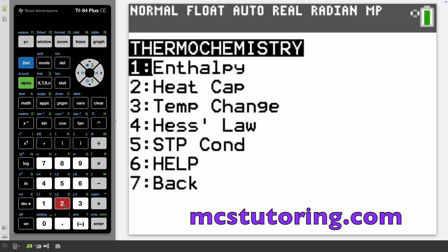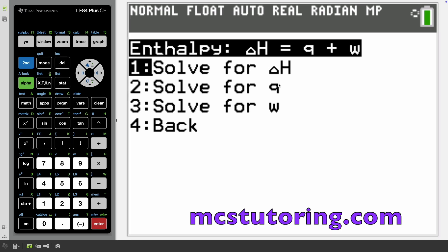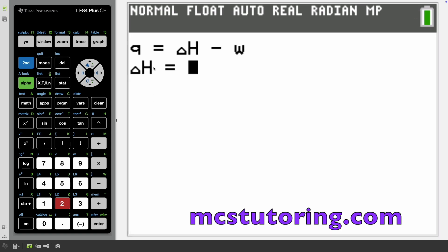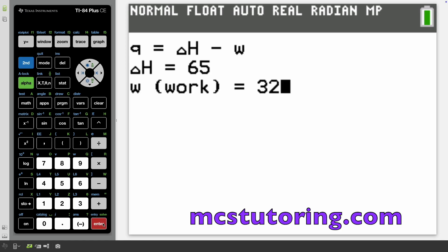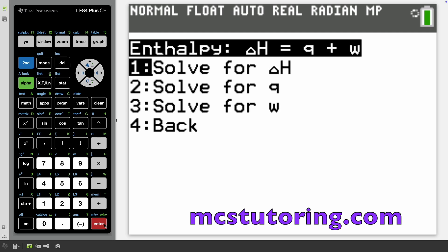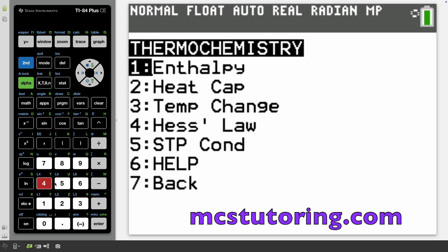Let's go to thermochemistry so you can see what it can do. We've got enthalpy, heat capacity, temperature change, Hess's law, STP conditions, and a help menu. This will solve like 90% of what I have on here because sometimes it's so complicated. For enthalpy, delta H equals Q plus W. We solve for delta H, Q or W. Let's solve for Q. Q equals delta H minus W. Let's say delta H is 65 and W is 32. So Q is 33.